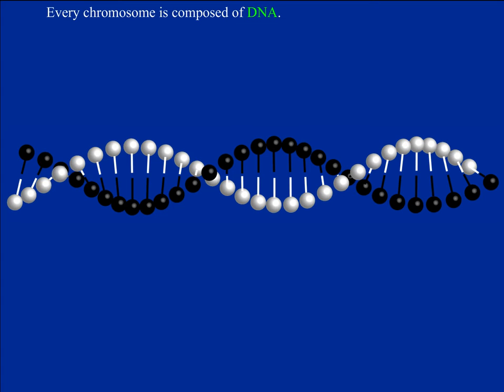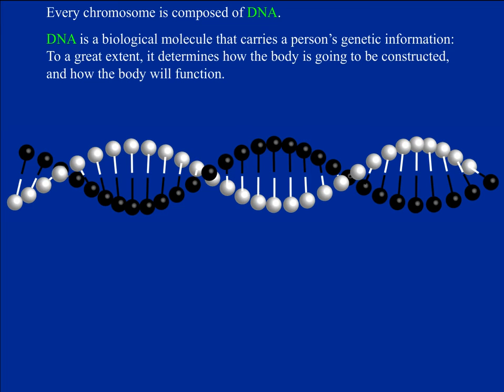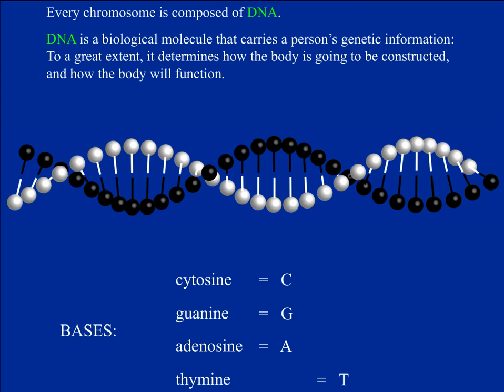Every chromosome is composed of DNA. The DNA molecule is very important functionally — to a great extent it determines how your body is built and how it functions. The DNA molecule consists of two chains that wind around each other, forming the famous DNA double helix. Each chain consists of many links, and each link has a chemical compound attached to it called a base. There are four kinds of bases: C, G, A, and T.